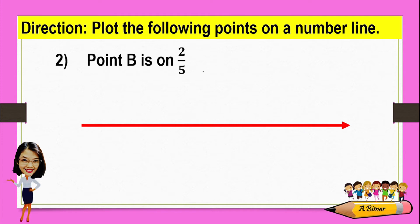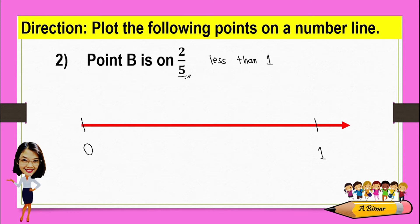Point B is on two-fifths. As you observe, two is less than five, which means this fraction is less than one. And since this fraction is less than one, then this fraction is between zero to one. Take a look at the denominator — since the denominator is five, divide this by five.